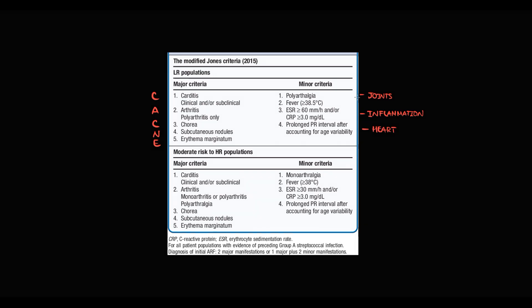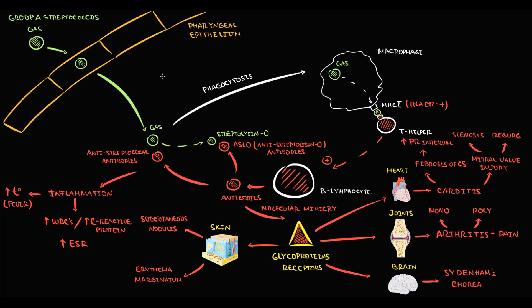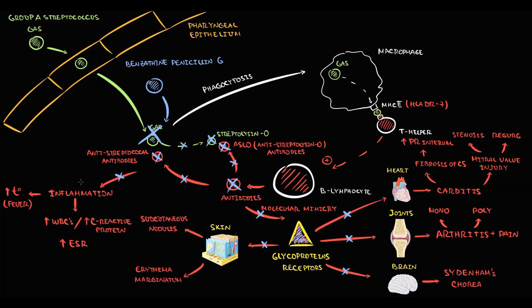The only difference between low-risk and high-risk population criteria is joint pain: in low-risk, pain in multiple joints is required, whereas in high-risk, pain in just one joint is sufficient. As a diagnostic method, we typically measure anti-streptolysin O (ASLO) antibodies. The major drug for prophylaxis of acute rheumatic fever is benzathine penicillin G, which kills Streptococcus. Without Streptococcus there will be no streptolysin, and thereby no substrate for antibody production. Without antibodies, inflammation will not develop and tissues will be spared — making benzathine penicillin G the first choice for prevention.